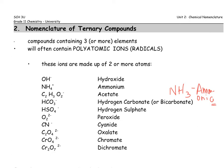Acetate is C2H3O2 with a negative one charge. It's important to get those charges right, because when we perform the crossover rule, that becomes really important. Hydrogen carbonate, sometimes known as bicarbonate, and then hydrogen sulfate, sometimes also known as bisulfate. You'll notice the trend that the prefix bi tends to mean that you've added a hydrogen along with some other polyatomic ion.